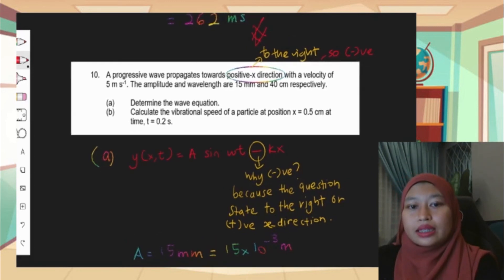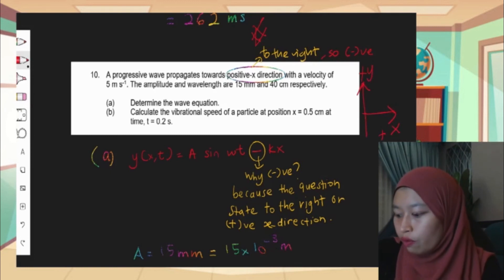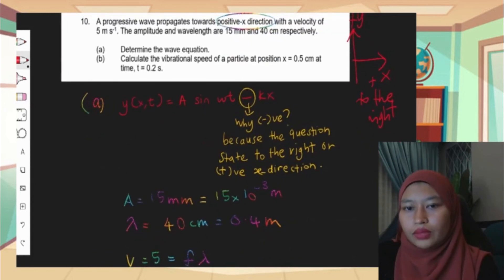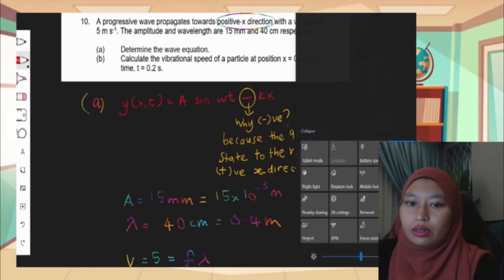So the general equation is A sine omega t minus kx. The question here is how do I know minus kx? Why don't I use plus kx? Because we have the keyword here - positive x direction. Positive x direction means if we sketch the graph, we can see positive x direction. This is positive y, this is positive x. So positive x direction is obviously to the right. Therefore if it's to the right, then the symbol will be negative. That is why I know.